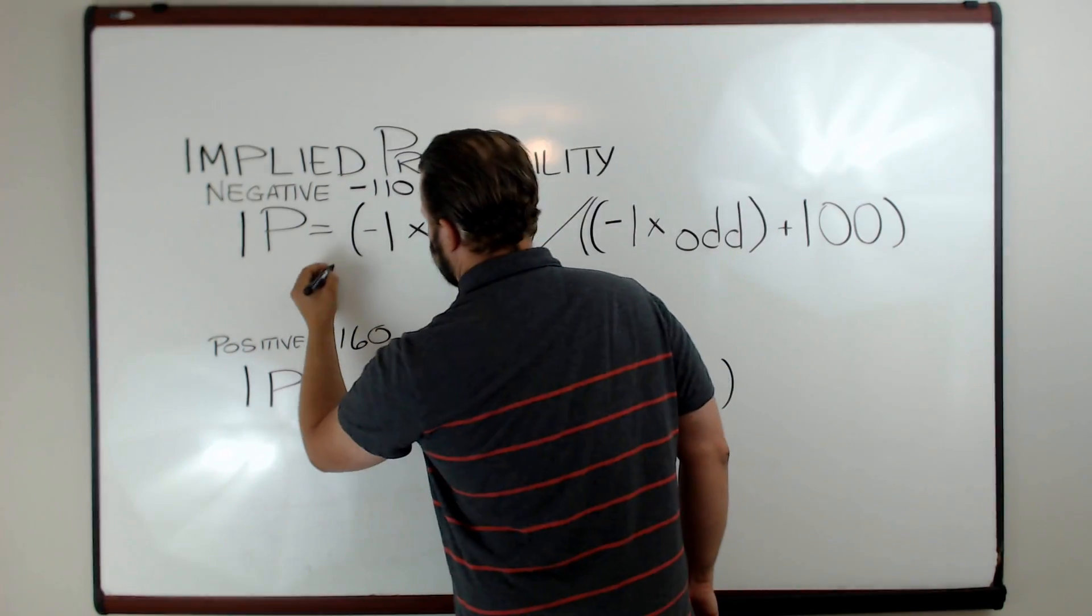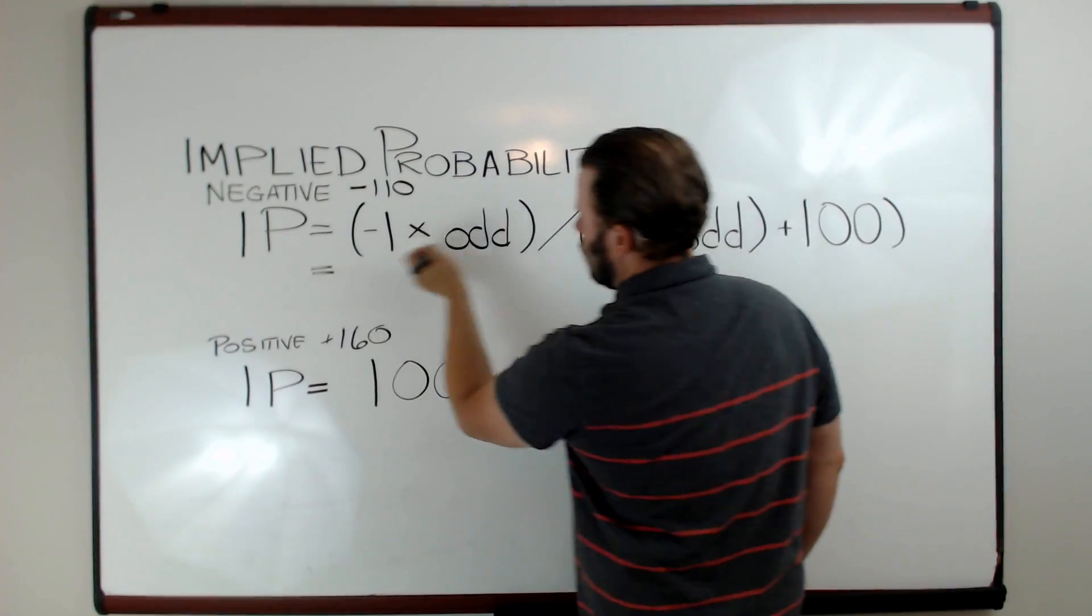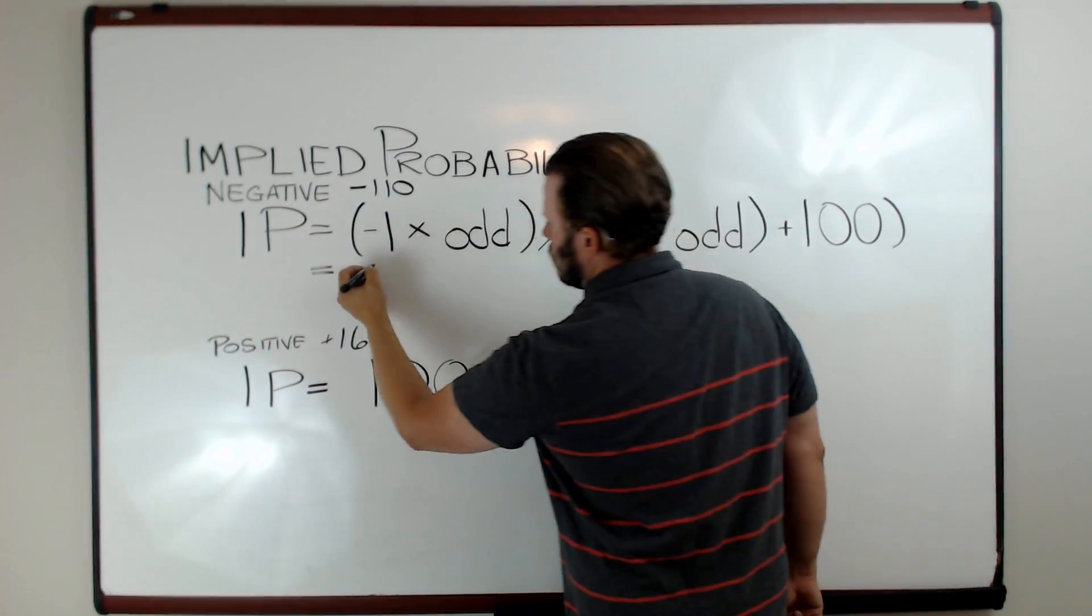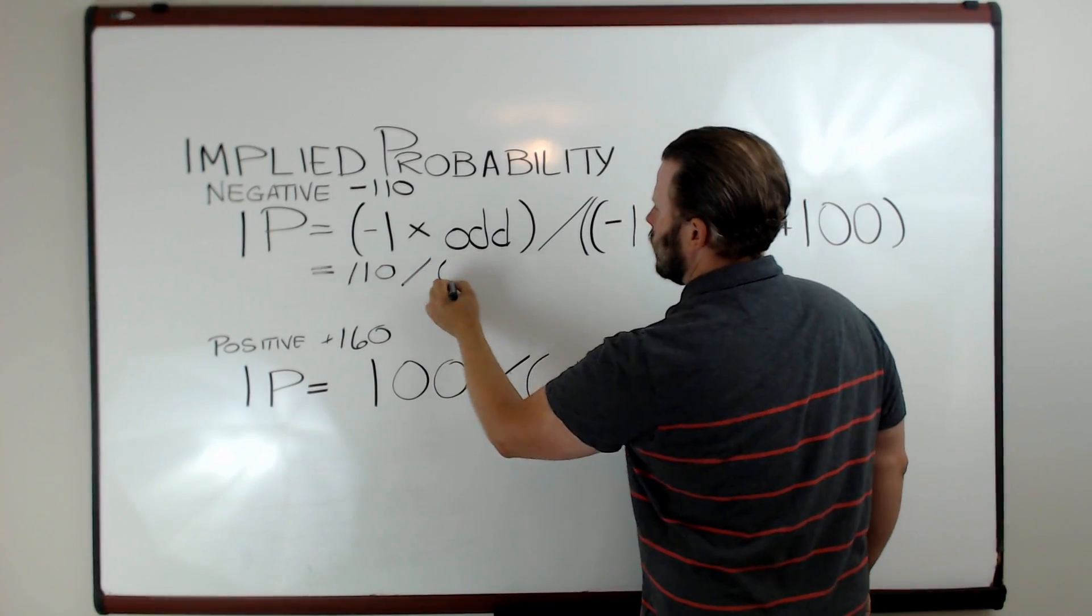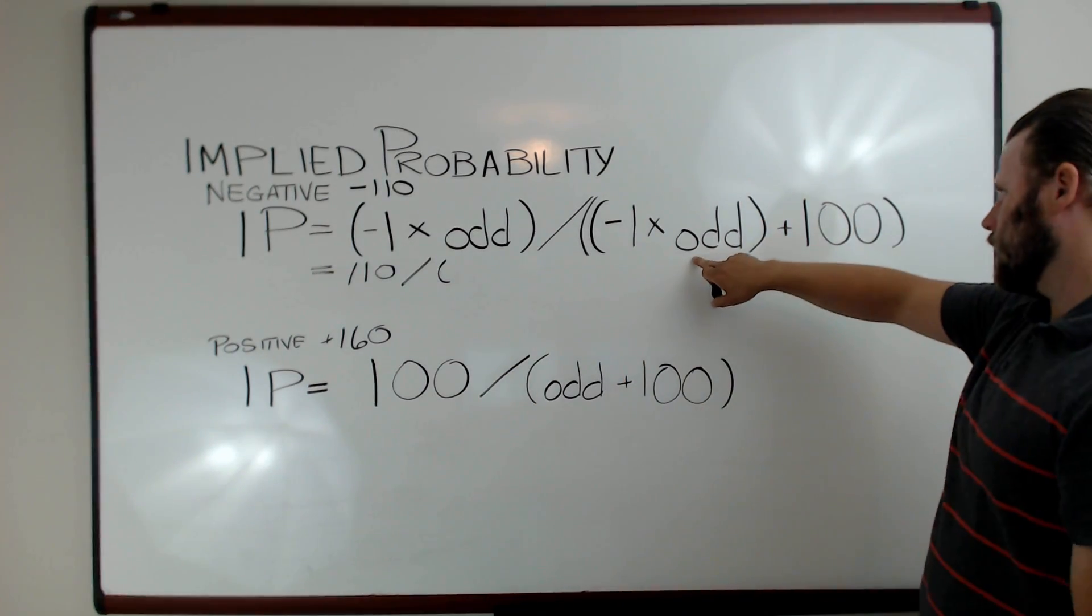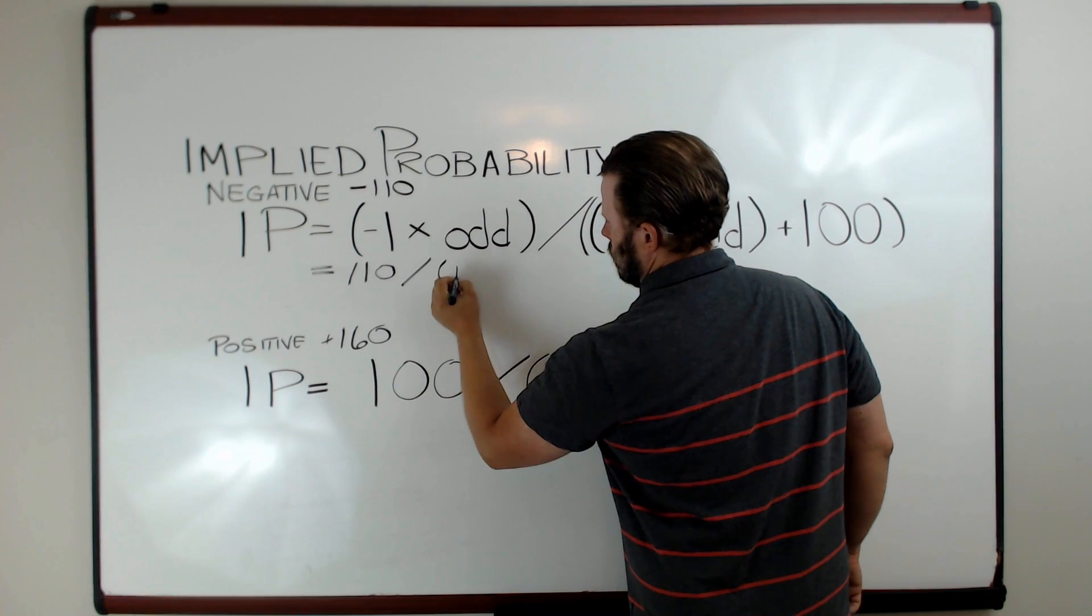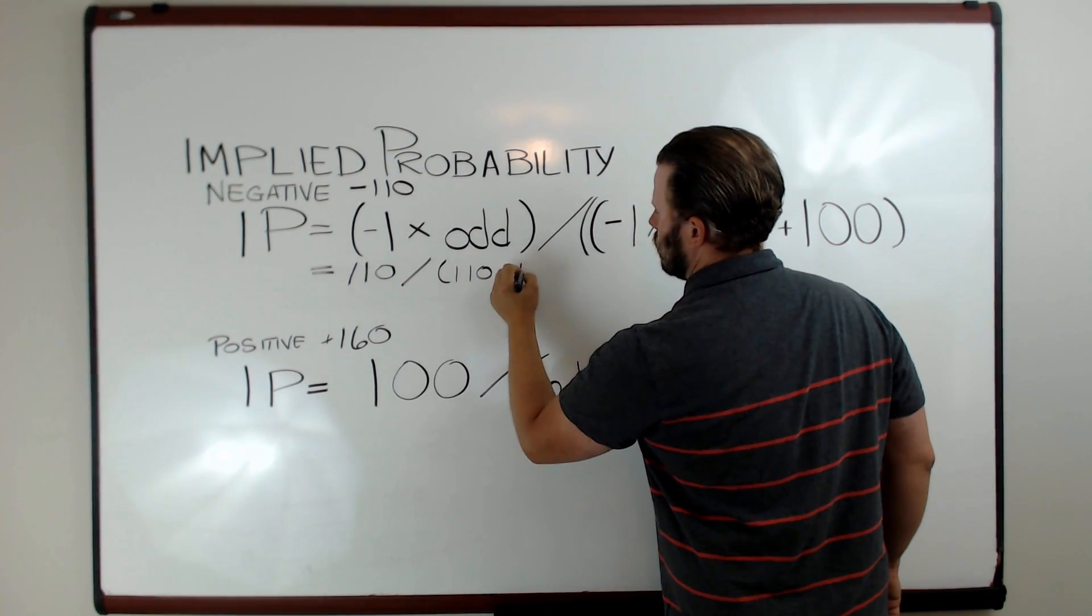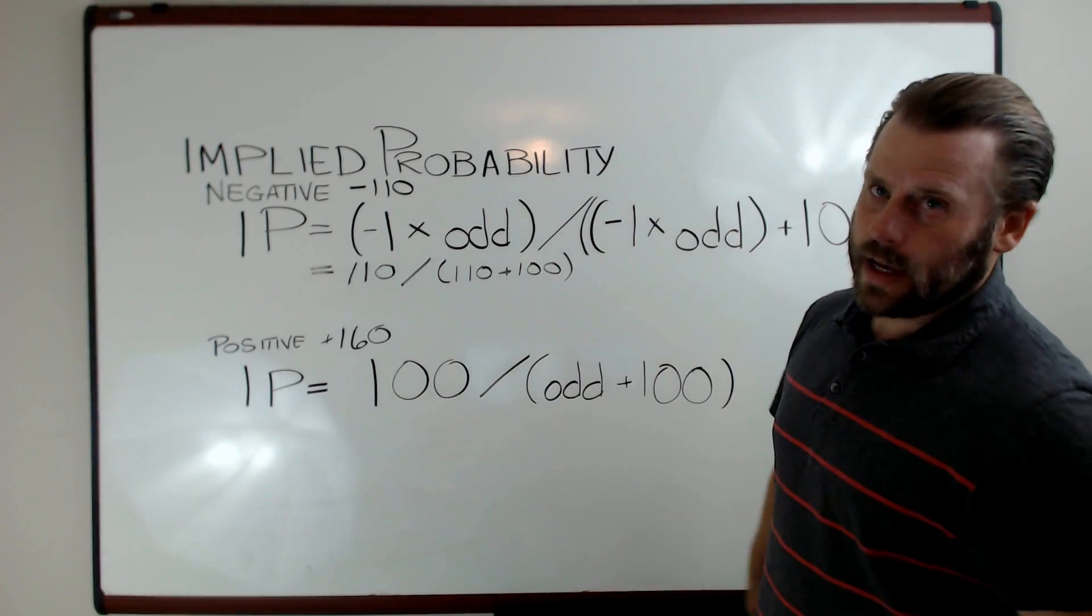Really, the simplification of this equation is negative 1 times minus 110, so that's giving us a positive 110 divided by, once again, our positive 110 plus 100.